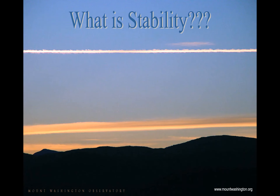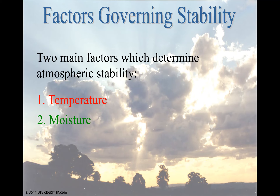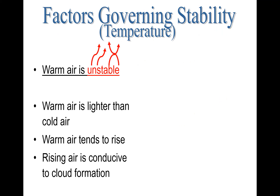Before we get into looking at cloud types, we need to look at what exactly is stability. Stability is simply the state of equilibrium or balance in the atmosphere. The two main factors which determine atmospheric stability are the temperature and moisture of the atmosphere. Warm air is generally more unstable because it's less dense or lighter than cold air. Because of that lower density, warm air tends to rise in the vertical, and this rising air motion is conducive to cloud formation.